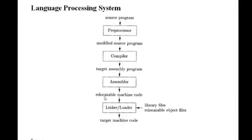In relocatable machine code, the first instruction starts from address zero. The next instructions are placed based on the number of bytes each instruction takes — for example, with direct addressing mode taking four bytes, successive instructions go at addresses 0, 4, 8, and so on. Whenever the program is moved into main memory for execution, the linker and loader adjust these addresses to match where the program is actually saved in memory.